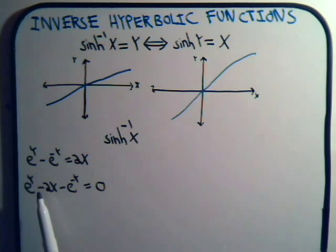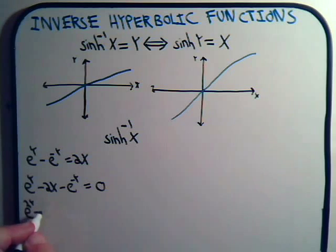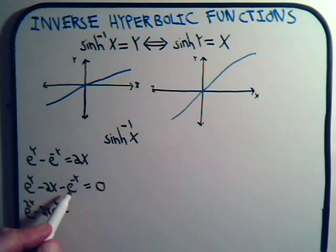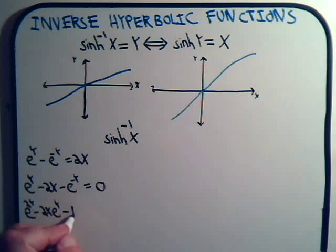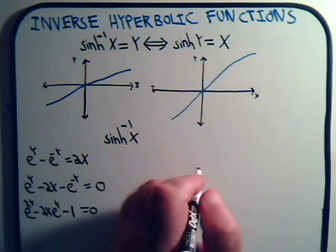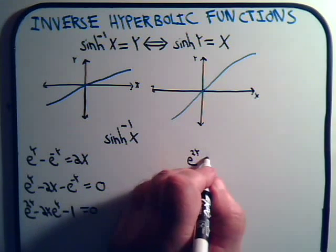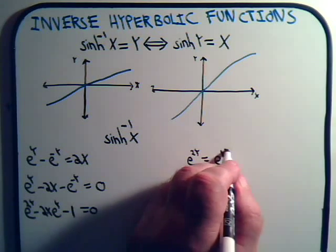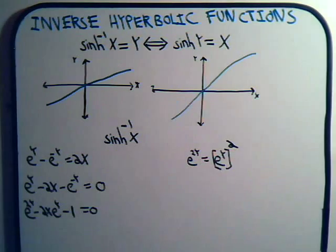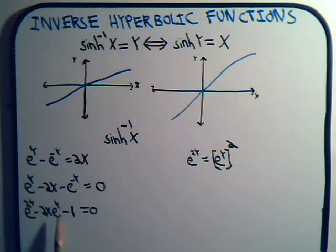We multiply both sides of the equation by e to the y, giving us e to the 2y minus 2x times e to the y minus 1 equals 0. Remember, e to the 2y is the same as e to the y squared. So we have e to the y quantity squared minus 2x times e to the y minus 1, which is a quadratic expression.